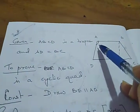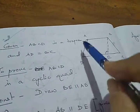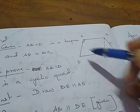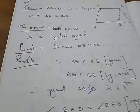Next, question number 8, which is a really good and important question. It is given: if the non-parallel sides of a trapezium are equal, prove that it is a cyclic quadrilateral. Trapezium means only one pair of sides is parallel. Here ABCD is a trapezium where AD equals BC — these are the two non-parallel sides. We have to prove that ABCD is a cyclic quadrilateral, meaning we must prove that the sum of opposite angles equals 180 degrees.